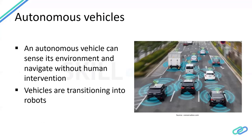An autonomous vehicle is something that can sense its environment and navigate without human intervention — essentially a vehicle without a driver. Imagine no steering wheel, no brake or accelerator, just a space like a dining table inside that can move by itself, like a train where you sit and it just moves without any intervention. Autonomous vehicles are essentially viewed as robots that can sense the environment, take decisions, and aid human beings.